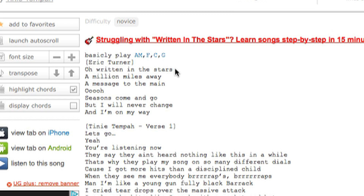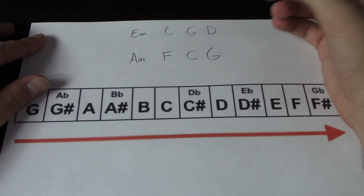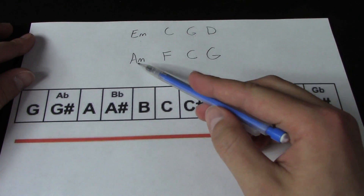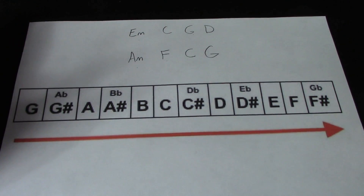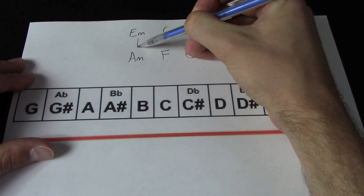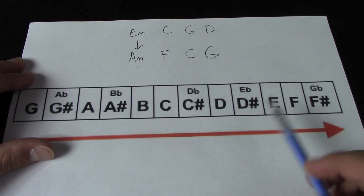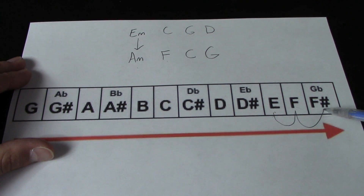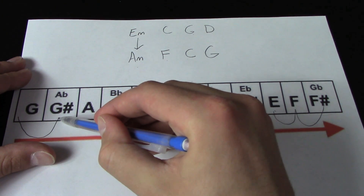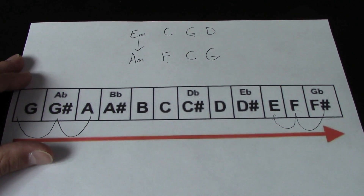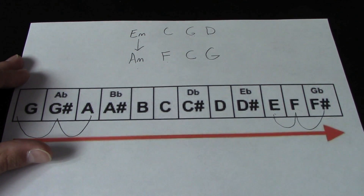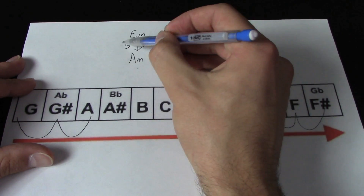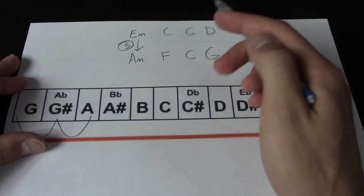Let's pull out Riptard's capo chart. Written in the Stars as I play it was E minor, C, G, and D. But when we looked it up, we saw A minor, F, C, G. Because it's in a different key. How do you switch from E minor to A minor? You find E — just ignore the minors — and then we want to go to A, so you wrap around. Start at E, go 1, 2, 3, 4, 5. So E to A is 5 steps to the right. If we put our capo on the 5th fret, we'll be able to play along with Written in the Stars by playing these chords.